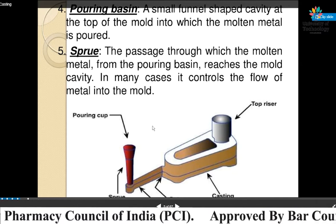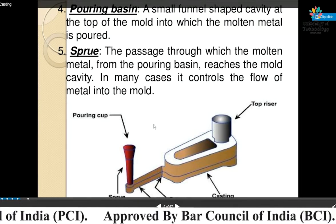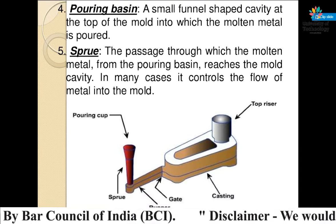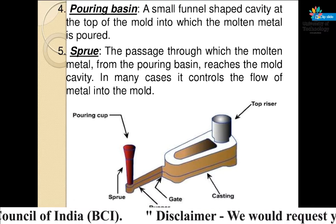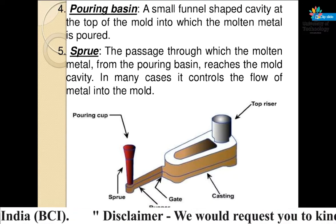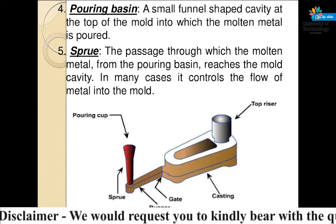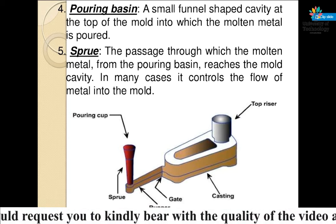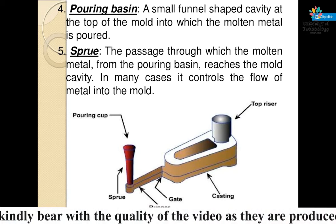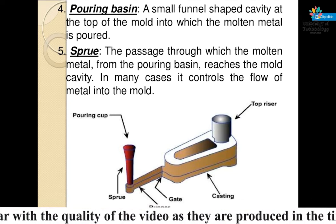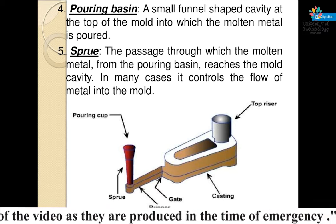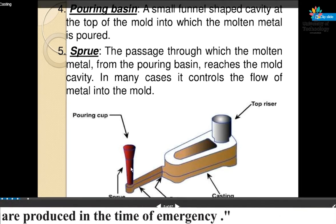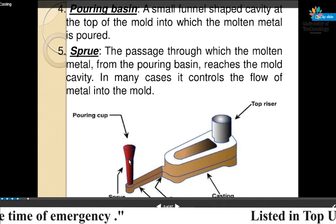Sprue — the passage through which the molten metal from the pouring basin flows into the mold cavity. In many cases it controls the flow of metal into the mold. That vertical part is known as the sprue.